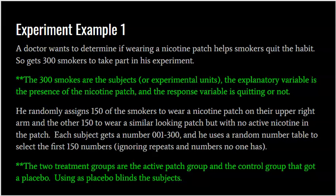He randomly assigns 150 of the smokers to wear a nicotine patch on their upper right arm, and the other 150 to wear a similar-looking patch with no active nicotine. Each subject gets a number 001 through 300, and he uses a random number table to select the first 150 numbers, ignoring repeats and numbers no one has. The two treatment groups are the active patch group and the control group that got a placebo — a fake patch.